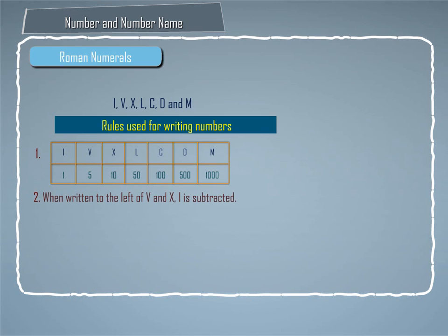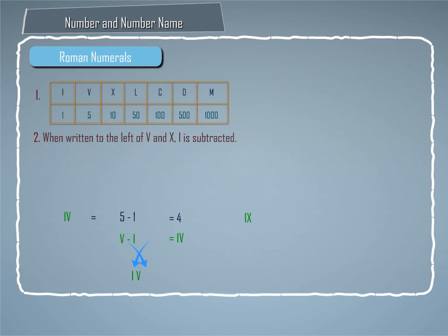Rule 2: When written to the left of V and X, I is subtracted. That is, IV equals 5 minus 1 equals 4, and IX equals 10 minus 1 equals 9.